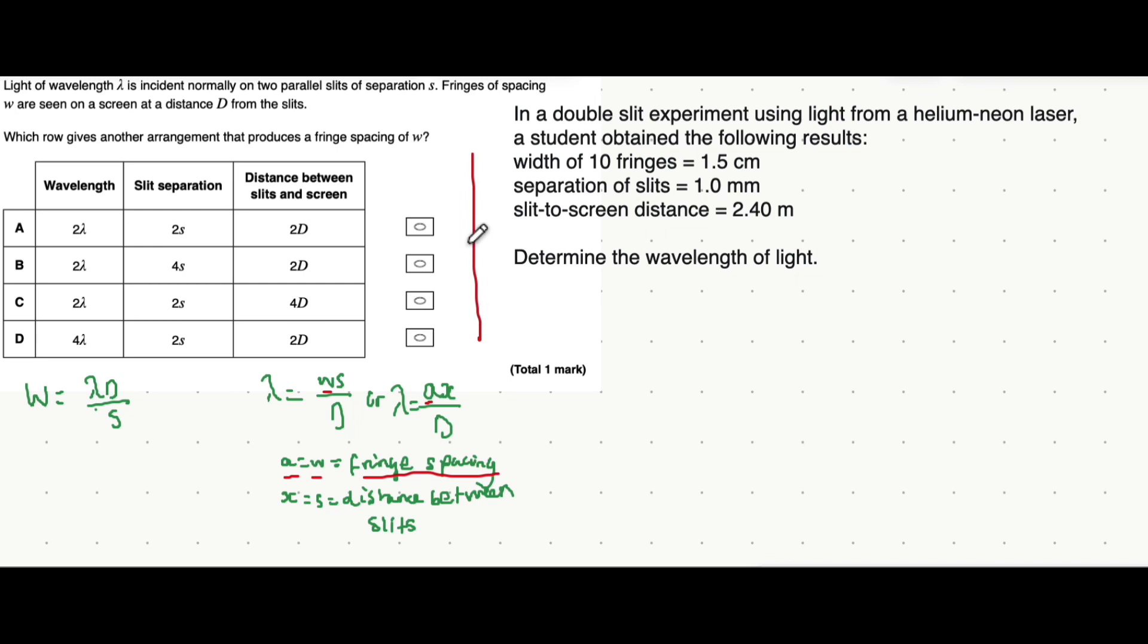On a screen there are maxima that appear which get smaller and smaller in intensity as you go further out. The distance between two of these maxima is what we call the distance between two bright fringes, or the fringe spacing.